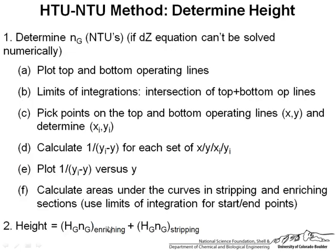Let's review what this method utilizes. So the first step is to determine NG or the NTUs. And so first we will plot the top and bottom operating lines and then we will determine the limits of integration from these lines. Step C is we will pick points on the top and the bottom operating lines to determine XI, YI. We will calculate 1 over YI minus Y for each set of points. Then we will plot 1 over YI minus Y versus Y and finally we will calculate the areas under these curves to plug that into our height equation in step 2 with a height equaling Hg and G enriching plus Hg and G stripping.